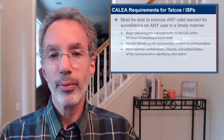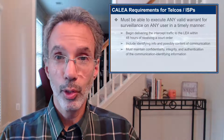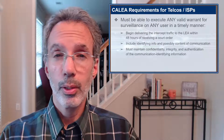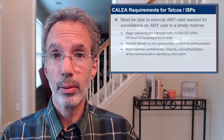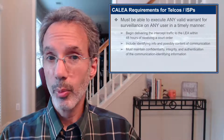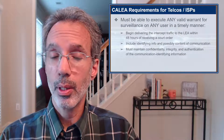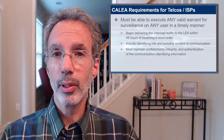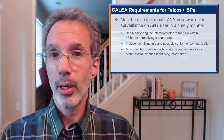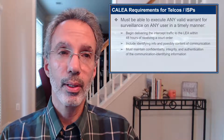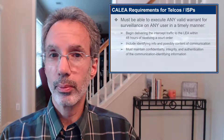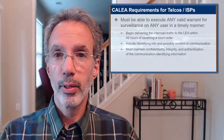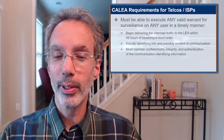Whoever is being surveilled cannot know about it. You also need to protect the privacy of other people associated with that communication and your other subscribers. You have to have strict policies on who has access to the information, who has the ability to set up live surveillance, and who within the company knows it's going on. You don't want your whole company knowing that a specific subscriber is being surveilled by the FBI under a court order.